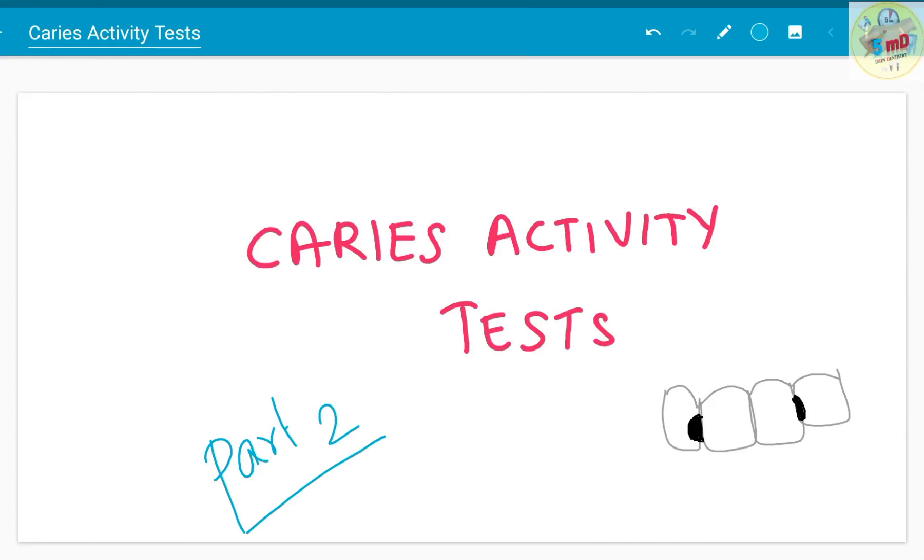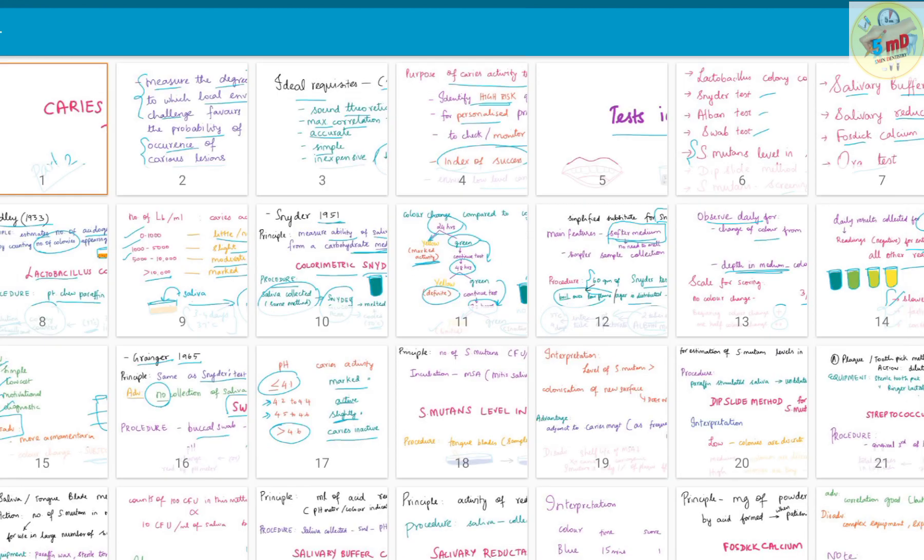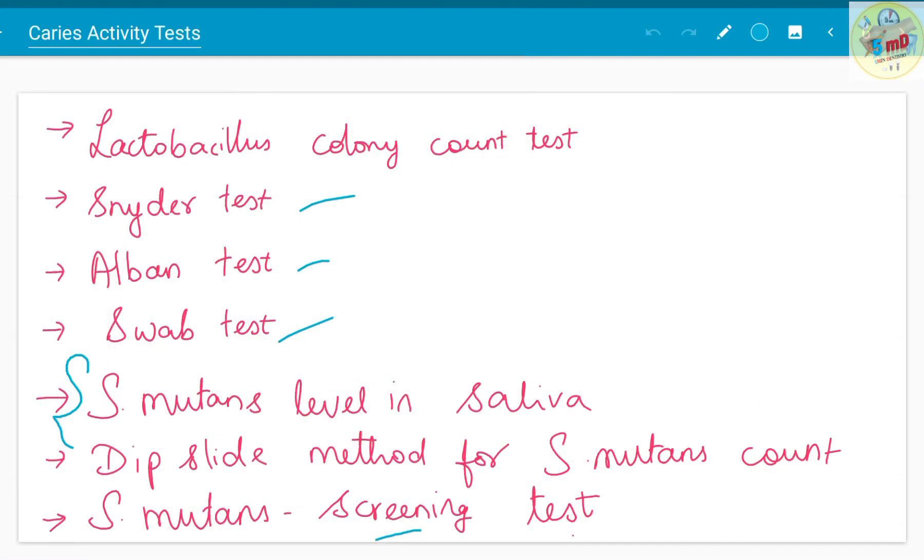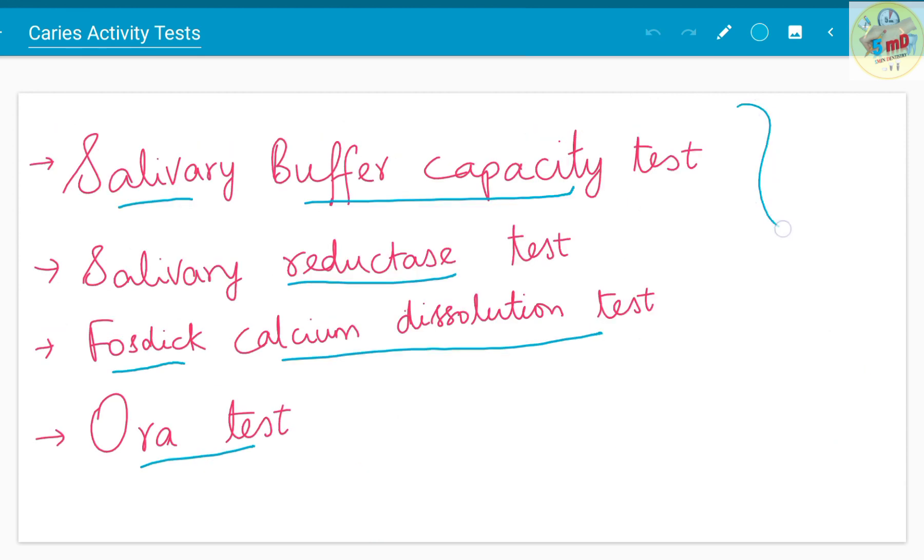Hello all. In the previous video, Part 1 of caries activity tests, we saw about four main tests of caries activity: lactobacillus colony count test, Schneider test, Albin test, and swab test. In this Part 2 video, we will see about streptococcus mutans counting tests, which includes three tests, and also four special tests known as salivary buffer capacity test, salivary reductase test, Phosidic calcium dissolution test, and aura test.